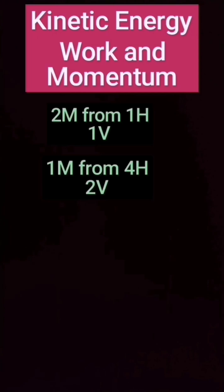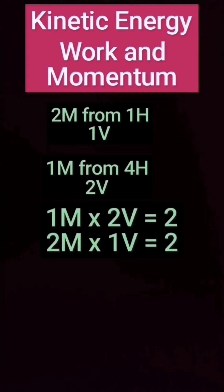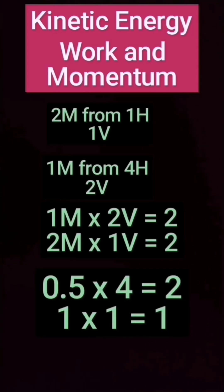Kinetic energy, work and momentum. We will be dropping a two mass from one height equaling one velocity, a one mass from four heights equaling two velocity. They would be equal in momentum, but they wouldn't be equal in energy.